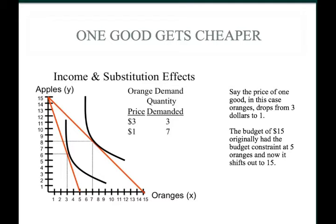Now the price of oranges has dropped from $3 to $1. With $15 and oranges at $1, we can now get 15 oranges. The price of an apple remains $1 and we still have $15, so we can still only get 15 apples. Our budget constraint has rotated because the price of one good has changed relative to the price of the other good.